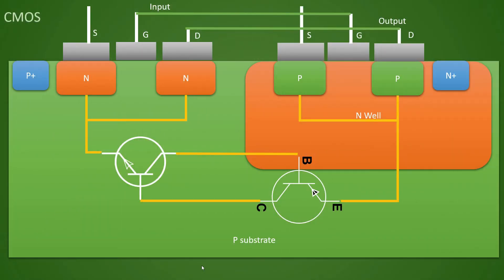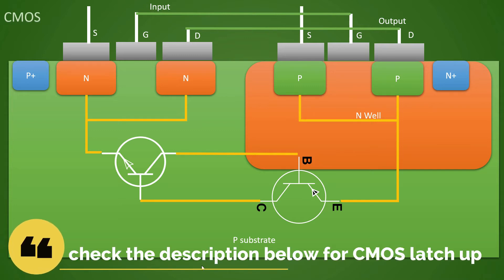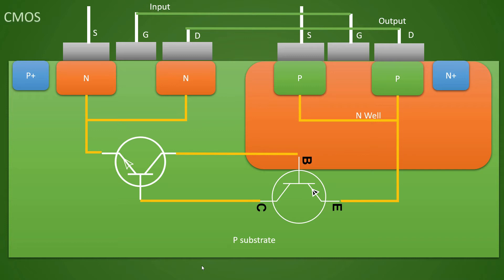As previously mentioned, we discussed about CMOS latch-up issue in the previous video. If you want to visit that video to understand that concept in detail, the link will be provided in the description below. Here we will quickly give you a brief idea about that phenomena. Basically, CMOS latch-up occurs if your input or output goes above VDD or below VSS.